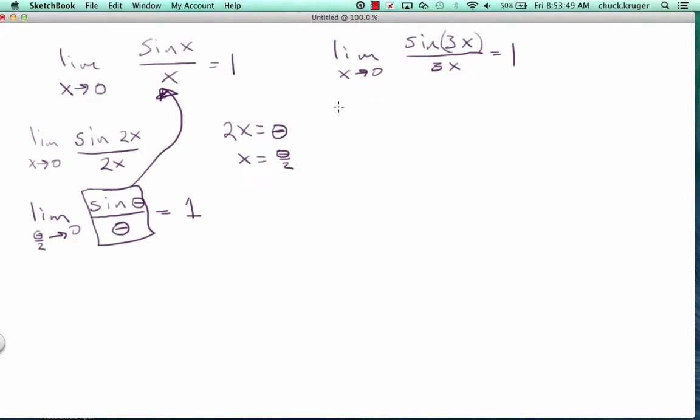All right, so hopefully you'll see that no matter what I have here, if these are identical and x is going to 0, I'm going to get 1.